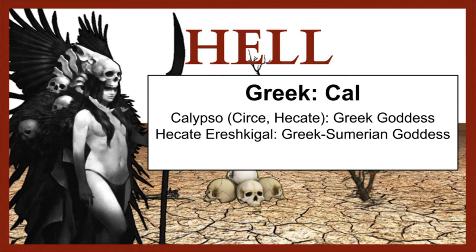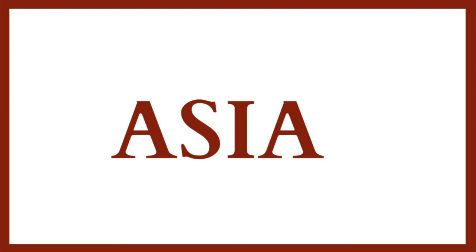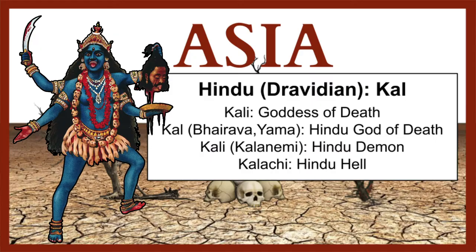In Greek mythology, Heket corresponds to the Sumerian goddess Ereshkigal, goddess of death. Many ancient texts correspond Heket with Ereshkigal, showing that the Greeks and Sumerians were already equating their deities as one and the same. Now we move from Europe to Asia, specifically to Hindu mythology.